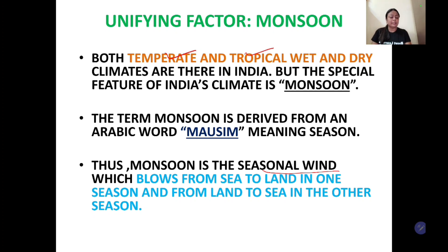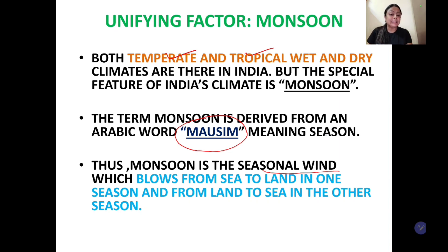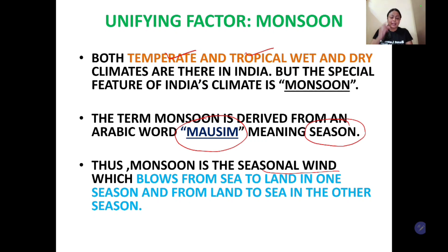Jo ki climate ko, India ke climate ko effect karta hai. Monsoon ek Arabic word se aaya hai, jiska word hai 'mossim', aur iska meaning hai 'season'. Mossim ka meaning hai season. Monsoon ka bahut unique nature hai.